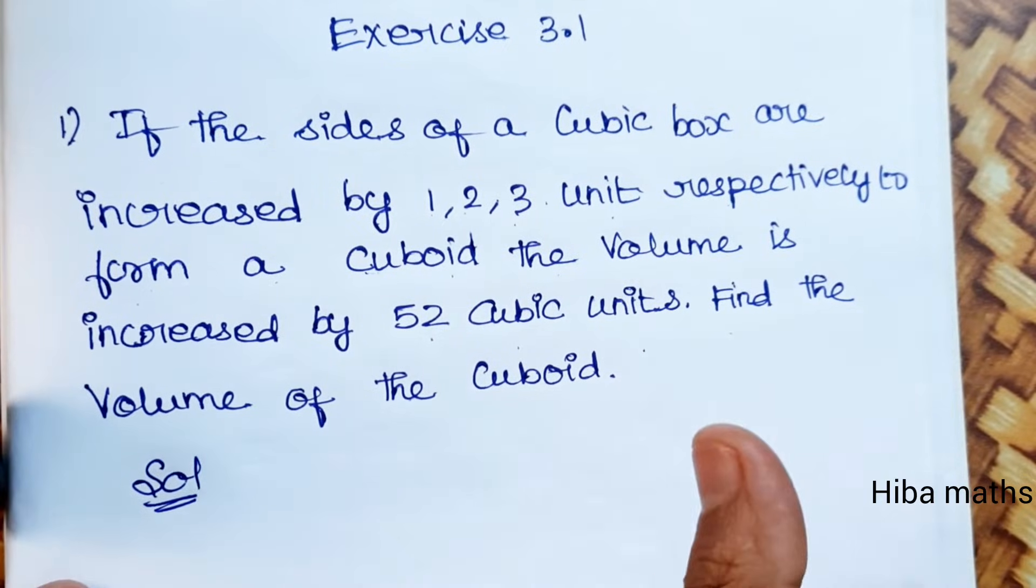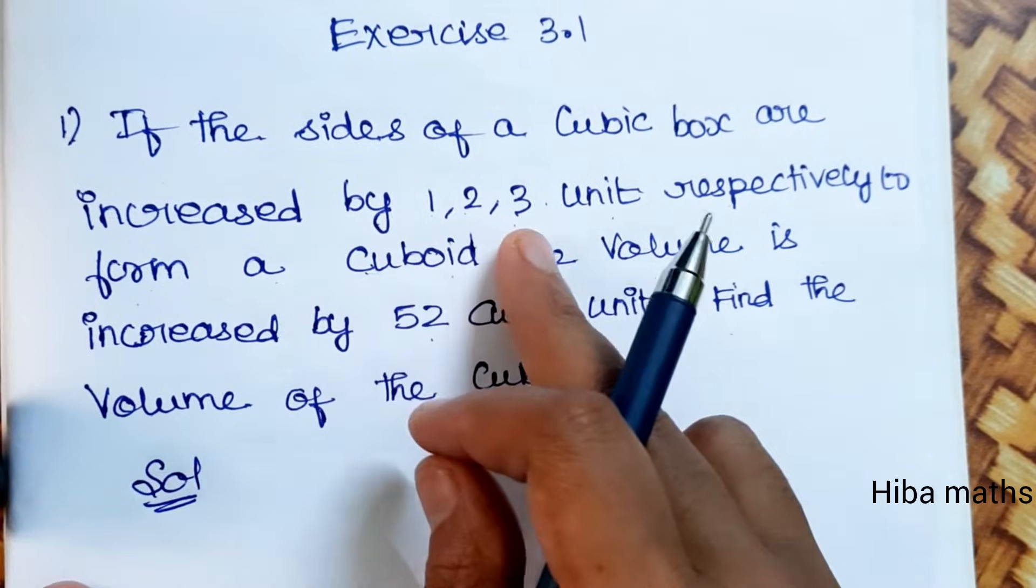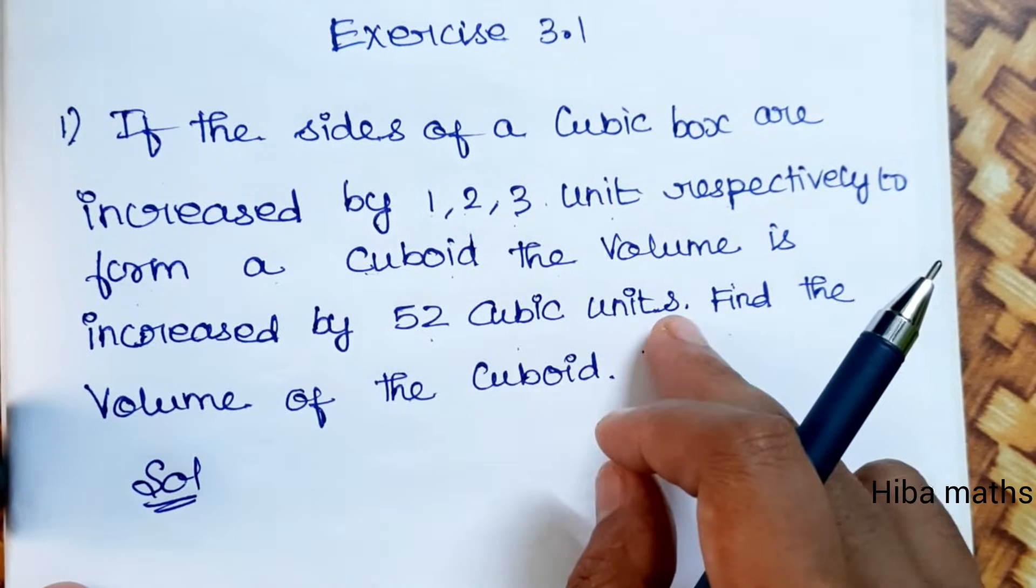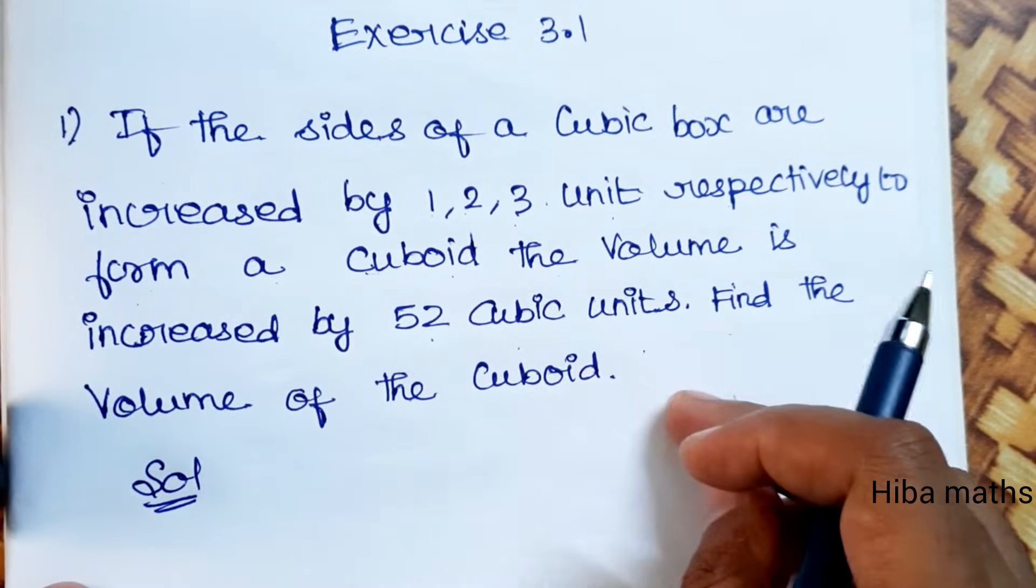So if you understand the question, there is a cube box and the sides are increased by 1, 2, 3, so if the volume is increased by 52, let's find the cuboid volume.